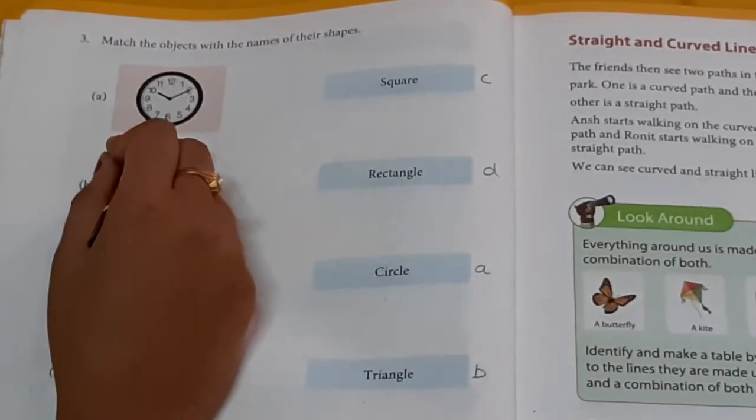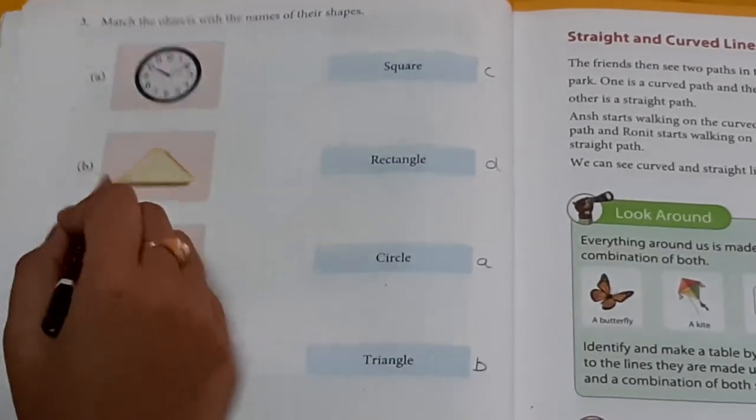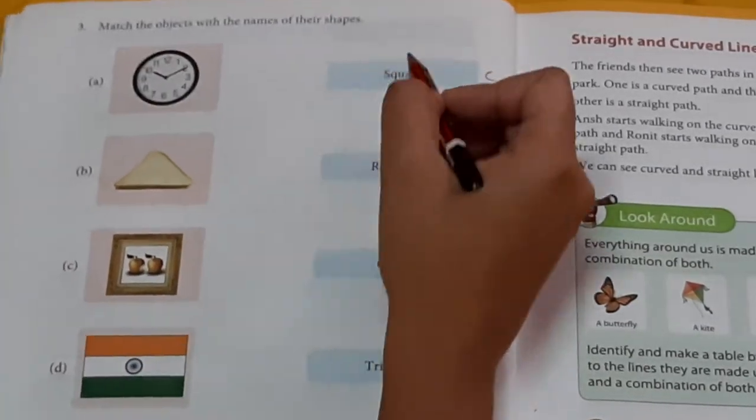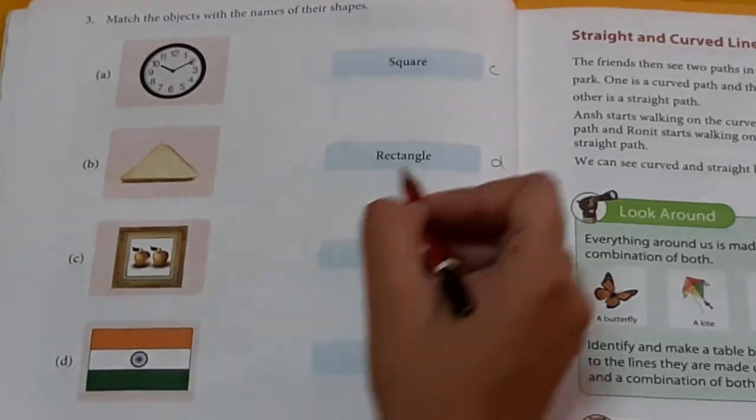Match the object with the names of their shapes. Clock. Circle. Sandwich. Triangle. Frame. Square. Flat. Rectangle.